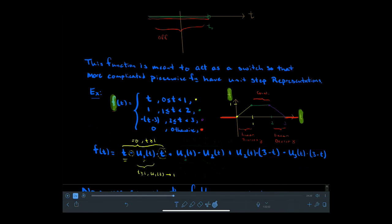After that's done, I need the function to be constant, so at one second I additionally turn on the function one. At two seconds this constant function is not going to live forever — it only lives between one and two seconds — so at two seconds we turn the number one off. This will cause a constant function for t between one and two.